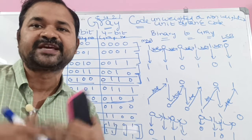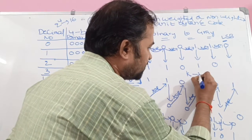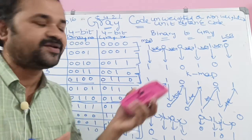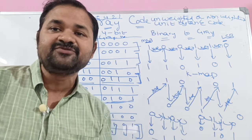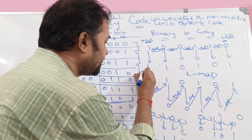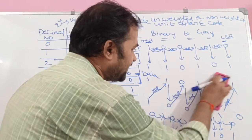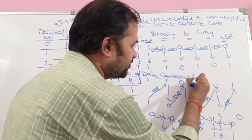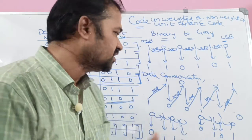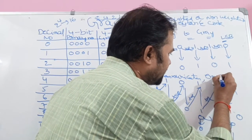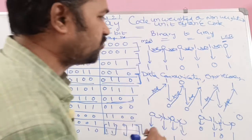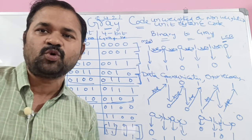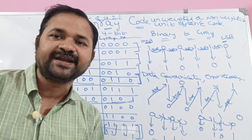Gray codes are mainly useful in Karnaugh map simplification — the table in a Karnaugh map is drawn based on gray code. Gray codes are also mainly useful for data transmission and data communication. For error recovery: since successive binary numbers differ by only one bit, if there are any errors during data transmission, the errors can be recovered very easily with the help of gray code.